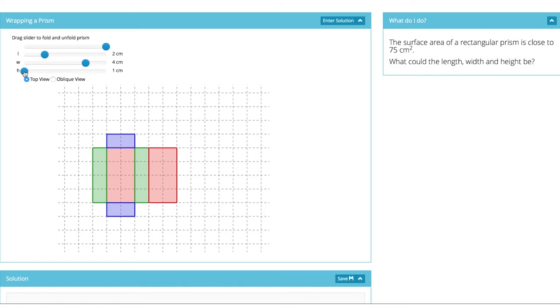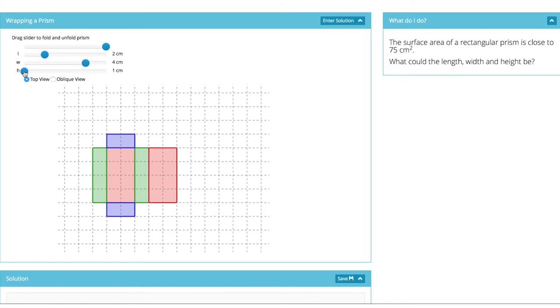So all of those ideas we want them to have about surface areas of prisms will arise, but what's great is that you can actually see what the area is because there is the net and because we are in a grid and because we can count and we can fool around so easily with changing the dimensions because there are sliders to let that happen.